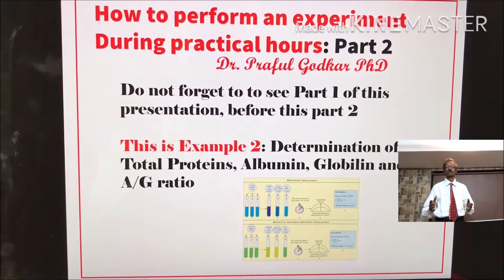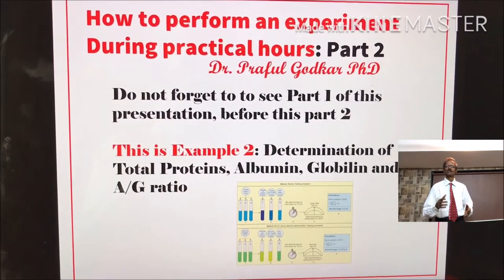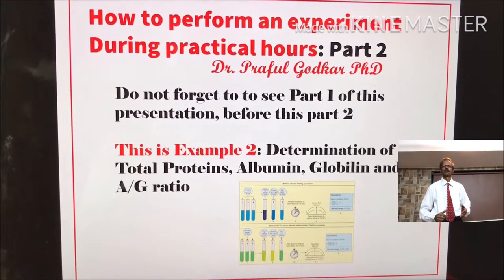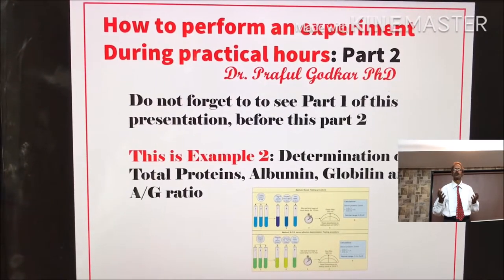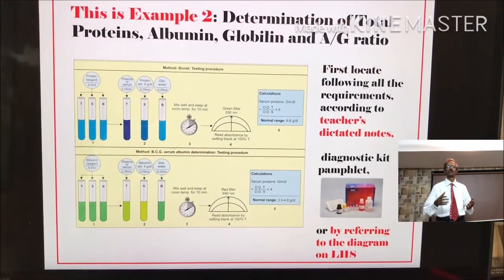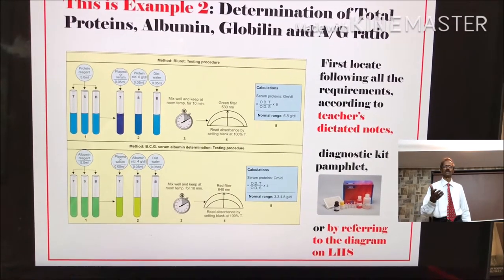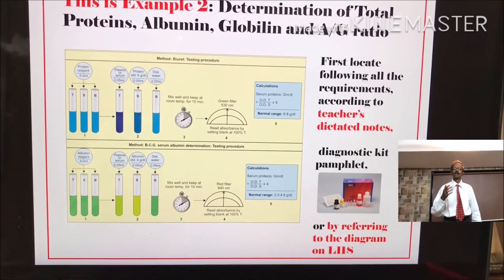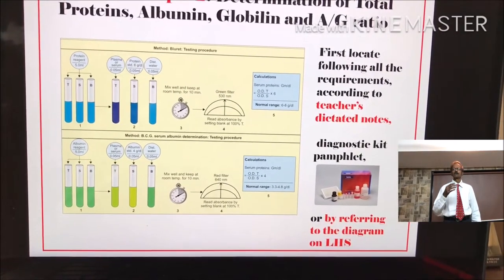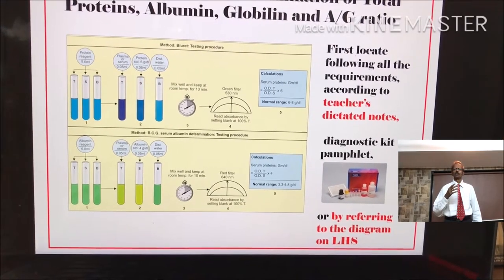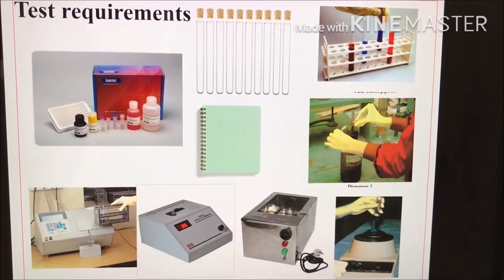For this part 2, the example is determination of total proteins, albumin, globulin, and albumin-globulin ratio in a biochemistry laboratory. First, locate all the requirements according to the teacher's dictated notes, or according to the diagnostic kit pamphlet, or by referring to the diagram on the left hand side.